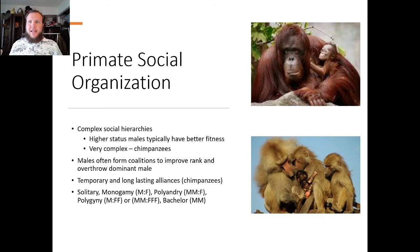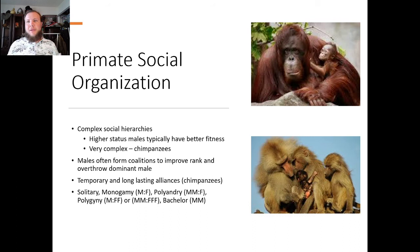Primates have complex social hierarchies, with higher-status males typically having better fitness. This can be very complex, such as in chimpanzees, which have a very complex pecking order because they're multi-male, multi-female — both males and females have their own hierarchies. Males in chimpanzees especially often form coalitions to improve rank and can overthrow a dominant male. They form alliances with each other — grooming each other, being best friends, literally having each other's backs.